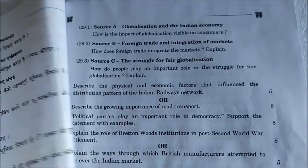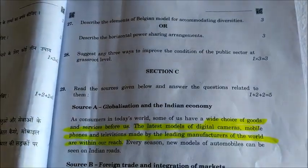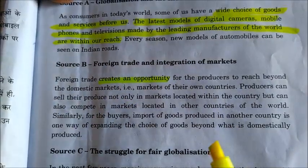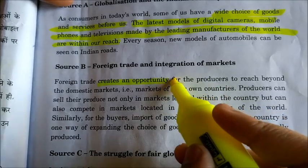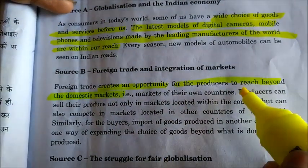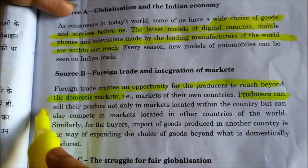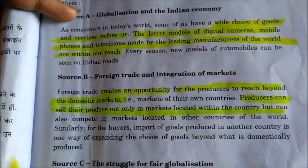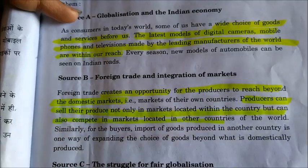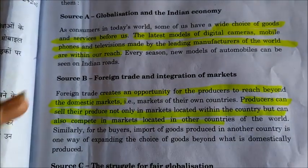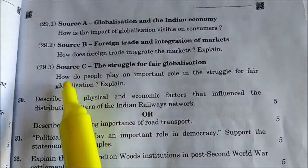Question 29.2 is: how does foreign trade integrate the markets? Explain. The answer is that it creates opportunity for producers to reach beyond their domestic markets. Producers can sell their produce not only in markets located within the country but can also compete in markets located in other countries. This is the answer for Source B.